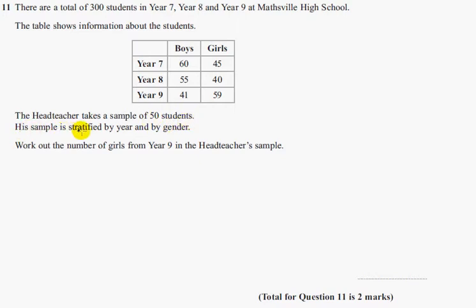The headteacher takes a sample of 50 students. His sample is stratified by year and by gender. Work out the number of girls from Year 9 in the headteacher's sample.